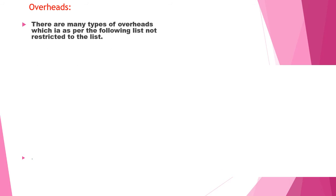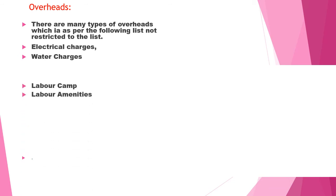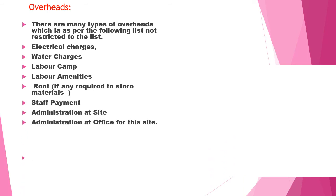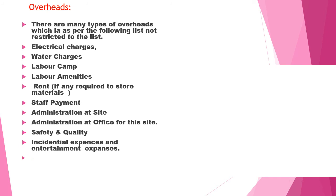Overheads consist of the following: electrical charges, water charges, labor camp, labor amenities, rent if you require storage for materials outside the project, staff payment, administration at site, administration expenses at the head office, safety and quality, insurance expenses, and entertainment expenses.